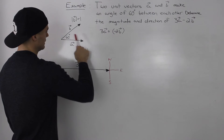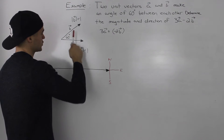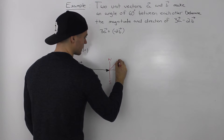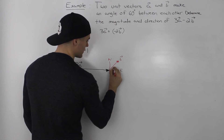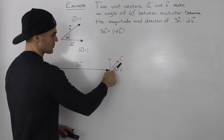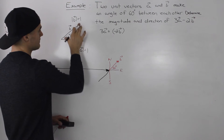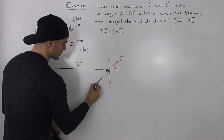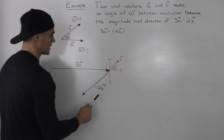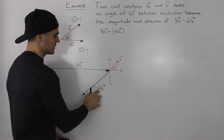Before drawing negative 2B, let's first draw the original vector B. Since A goes in the east direction, B would be 60 degrees north of that. Now, when we add negative 2B, the negative means we go in the opposite direction of original vector B. And the 2 means the magnitude of B is doubled. So negative 2B goes in the opposite direction of B with twice the length.